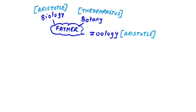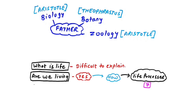The father of biology is Aristotle, the father of botany is Theophrastus, and the father of zoology is also Aristotle. Defining life is very difficult — it is like searching for a black ant in a dark room, which is practically impossible.